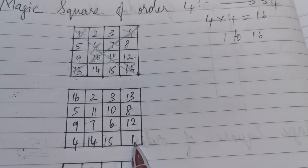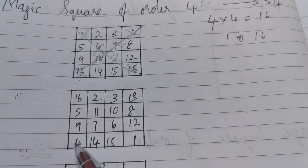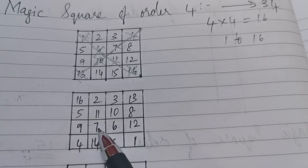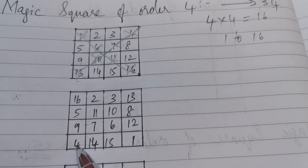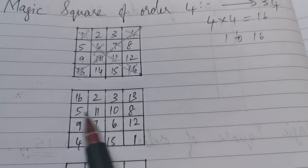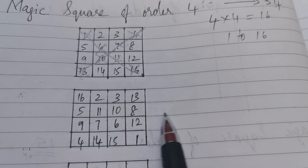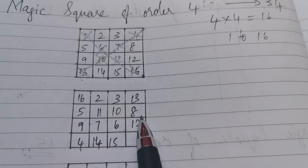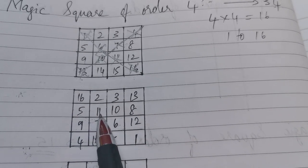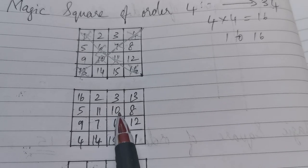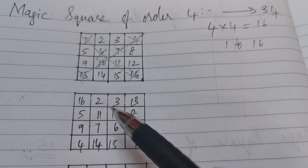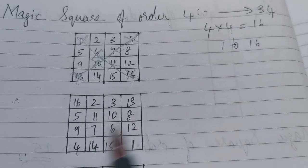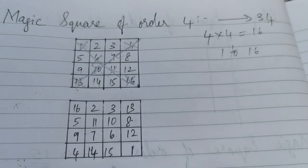Along this diagonal the sum is 34. Checking the other diagonal: 13 plus 10 is 23, plus 7 is 30, plus 4 is 34. Trying a horizontal row at random — the second row: 5 plus 11 is 16, plus 10 is 26, plus 8 is 34. So either way — horizontally, vertically or diagonally — the sum will be 34.